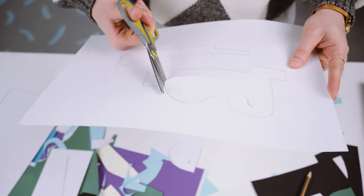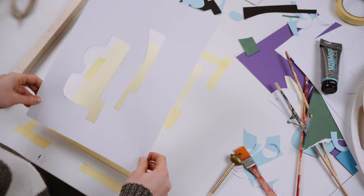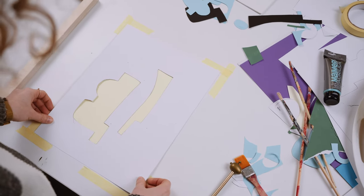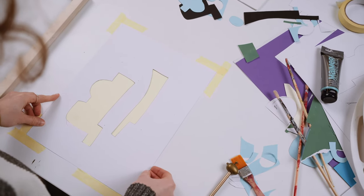Gdy wzór jest gotowy, wycinamy go z papieru lub folii i umieszczamy pod ramką z siatką. To jest nasz szablon.